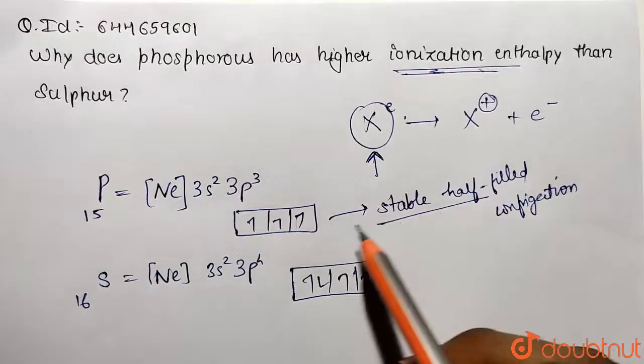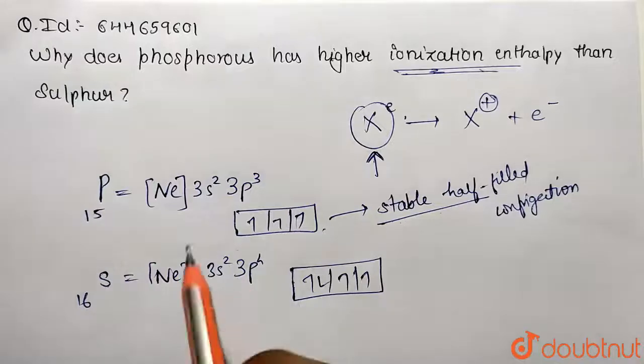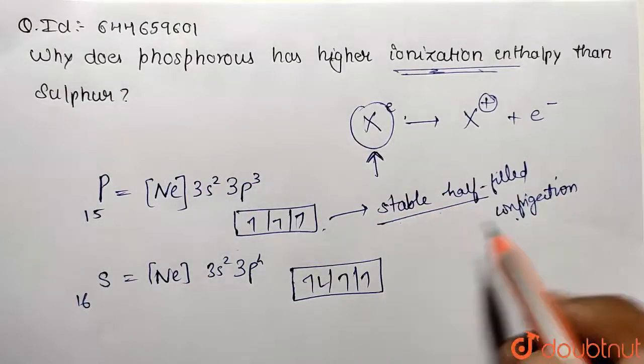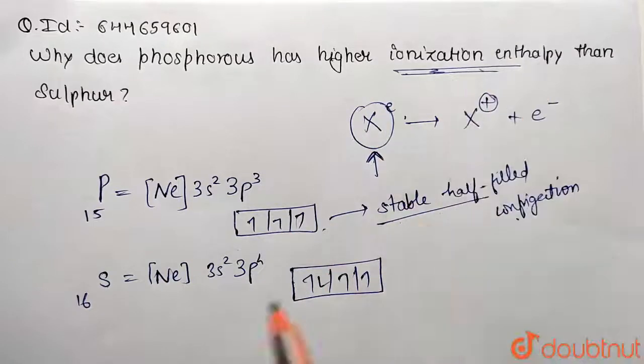Configuration is not disturbed easily, it requires more ionization value. So this is the solution for the problem. The answer will be stable half filled configuration of phosphorus will lead to its higher ionization enthalpy value than sulfur.